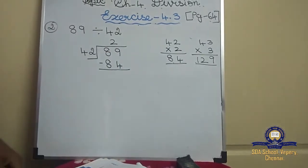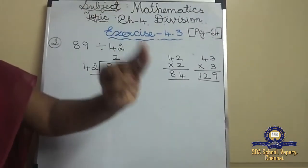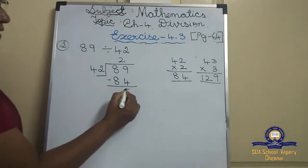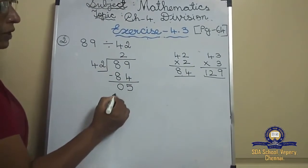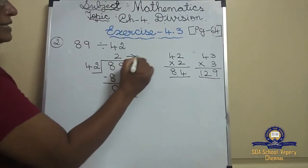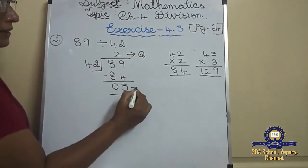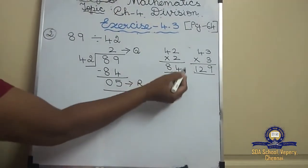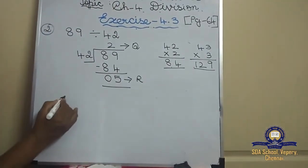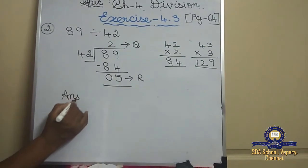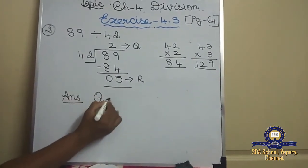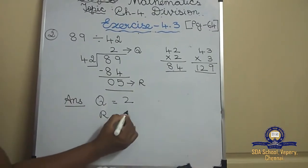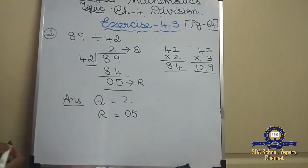Now subtract 89 minus 84. After 4, count up to 9: 5, 6, 7, 8, 9 — that's 5. So the remainder is 5. This is the quotient and this is the remainder. The answer: quotient is 2 and remainder is 5.